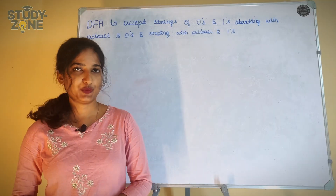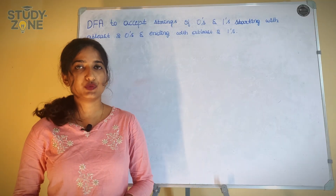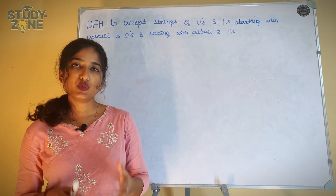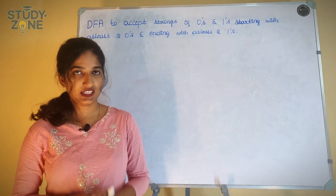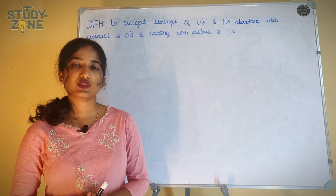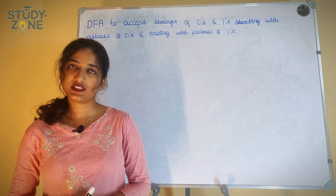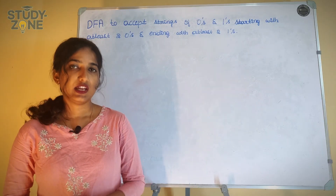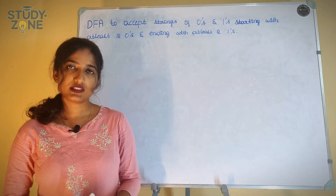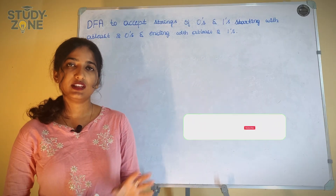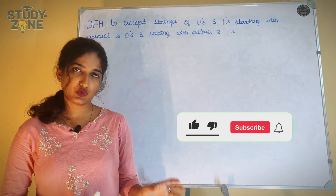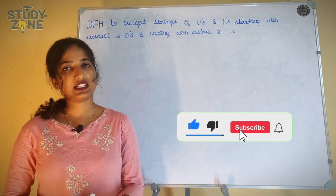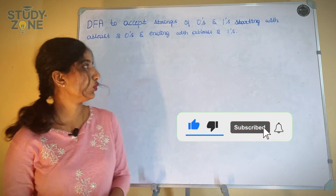Hello everyone, welcome back to my channel. Today we are going to discuss how to design a DFA that is going to accept strings of zeros and ones which must start with at least two zeros and end with at least two ones.